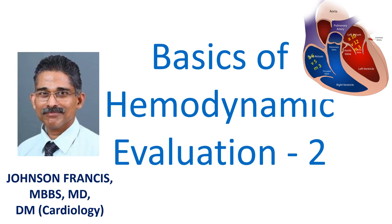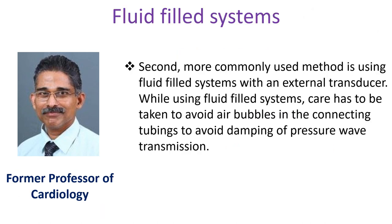This video is the second in the series on basics of hemodynamic evaluation. Pressure measurement in each chamber is an important aspect of hemodynamic evaluation. Two types of catheter-based pressure measurements are possible: one is a catheter-tipped manometer, which is more ideal but expensive. The second, more commonly used method, is using fluid-filled systems with an external transducer. Care has to be taken to avoid air bubbles in the connecting tubings to avoid damping of pressure wave transmission.